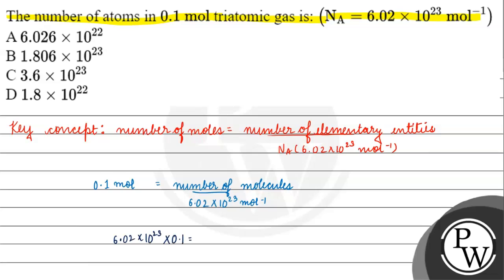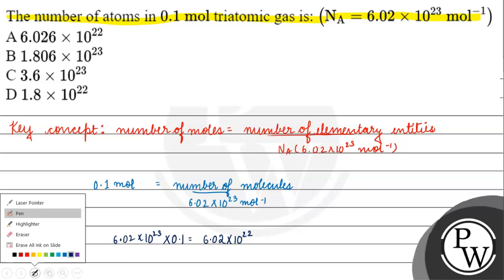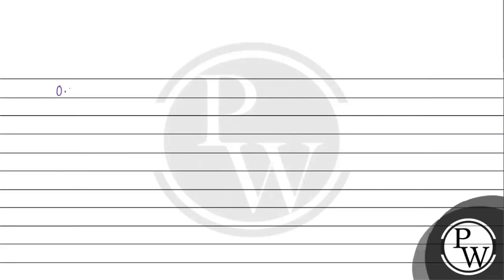This equals 6.02 into 10 to the power 22. So 0.1 mole of triatomic gas has 6.02 into 10 to the power 22 molecules.